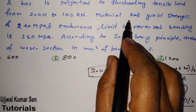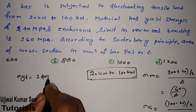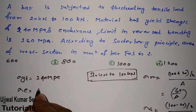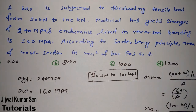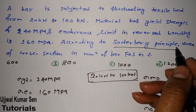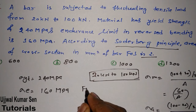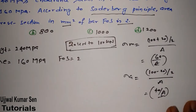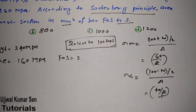We don't know area yet. The material has yield strength σyt = 240 MPa, and endurance limit in reversed bending σe = 160 MPa. According to the Soderberg principle, we have to find the area of cross section in mm² if the factor of safety FOS = 2. We will use the Soderberg equation to find area.